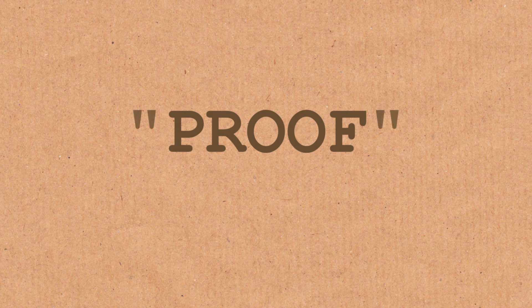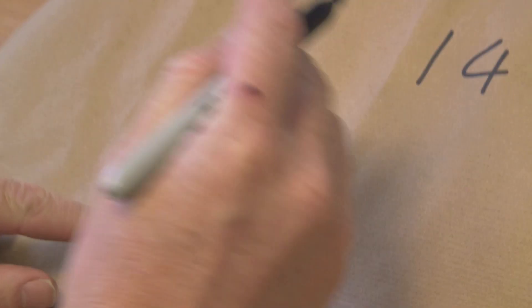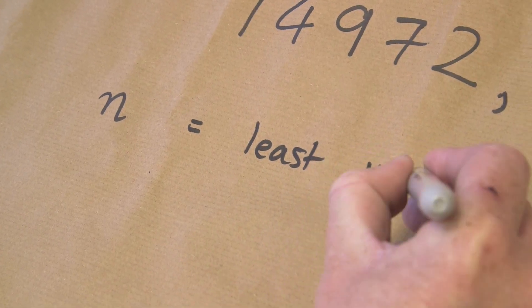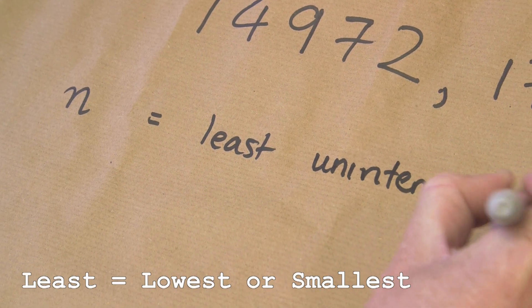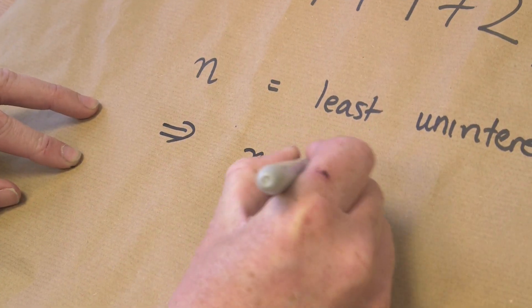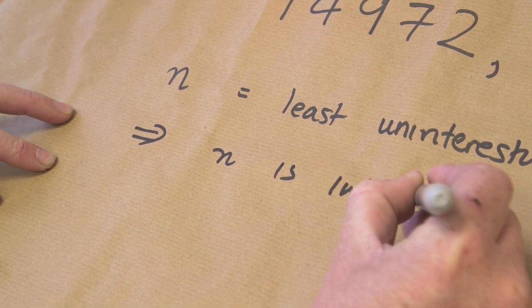Can they be uninteresting? There's actually a mathematical proof — in inverted commas — that says there is no number that is uninteresting, that all numbers are interesting. It's very simple. Let's prove it by contradiction. We're assuming that not all numbers are interesting. So let the number n be the least uninteresting number. But n is the least uninteresting number, so it's interesting. That implies n is interesting — you've immediately run into a contradiction.